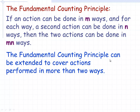The fundamental counting principle can be extended to cover actions that can be performed in more than two ways. For example, if you were purchasing an automobile, there might be a certain number of exterior colors times a certain number of interior colors times perhaps four different engines and three different transmissions. You could figure out how many possible automobiles you could pick for any particular model. So it doesn't have to be just something done in two different ways.